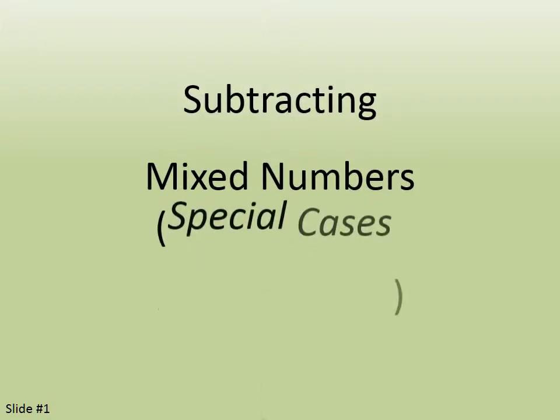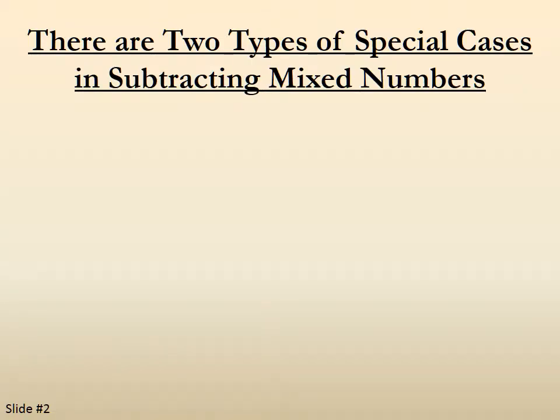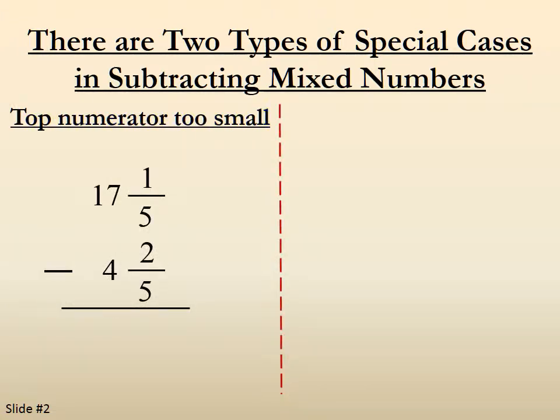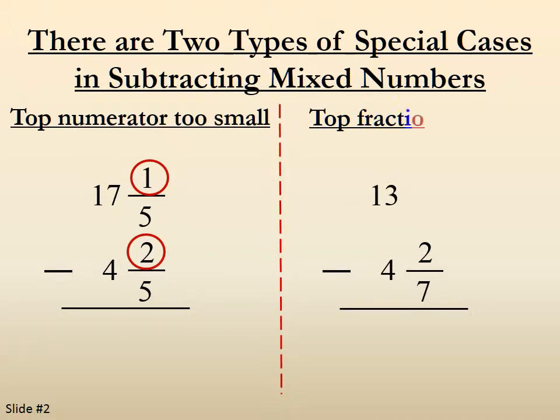Subtracting Mixed Numbers Special Cases. There are two types of special cases in subtracting mixed numbers. The first is when the top numerator is too small, because I can't subtract 2 from 1. The second case is where the top fraction is missing.